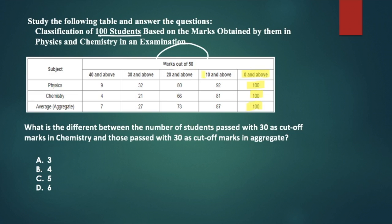How many students have marks 10 and above in physics? 92 here. That means 8 people scored 0 to 10. Similarly, 81 students in chemistry have 10 and above, which means 19 people have 0 to 10. In aggregate, 87 students have got 10 and above, that means 13 students have got 0 to 10. So we will do all the calculations in our mind.